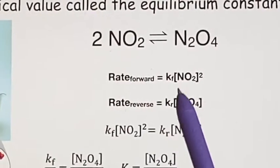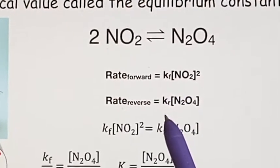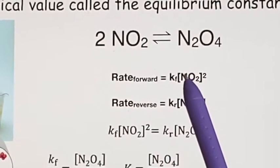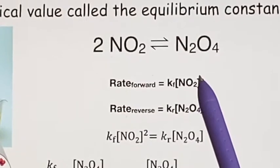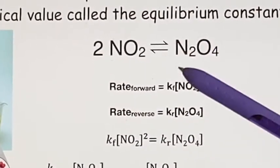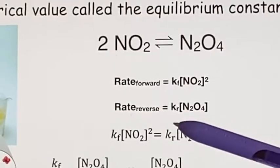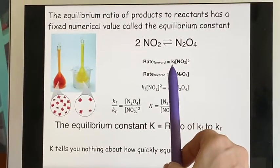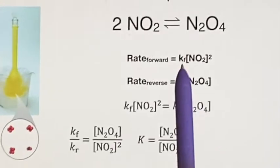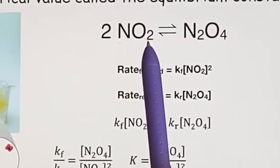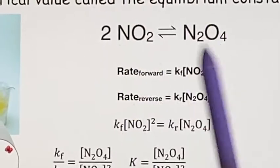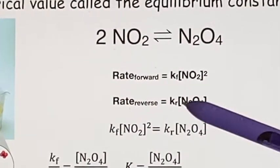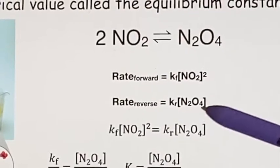Remember, in the last chapter, we said K1 and K-1, but that was when we were considering multiple different steps. Forward and reverse are quite common to call these as well. The rate forward would be Kf for forward, and then the nitrogen dioxide concentration squared. The rate in reverse would be Kr for reverse, and then the concentration of the dinitrogen tetraoxide.